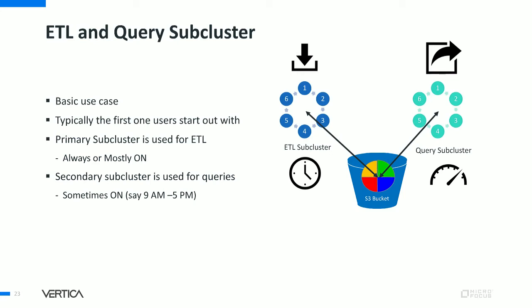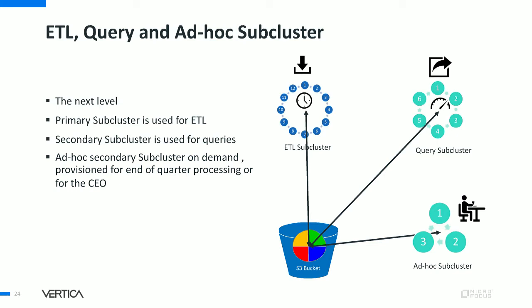As the use of Eon Mode increases, users graduate into the second use case. They still have the primary subcluster for heavy ETL running nonstop, plus their usual query subcluster, but they may add another secondary subcluster for ad hoc workloads. The motivation is to isolate unpredictable workloads from predictable ones, so as not to impact certain SLAs. Ad hoc queries or larger batch workloads run on a different secondary subcluster so they don't impact the more predictable workload.